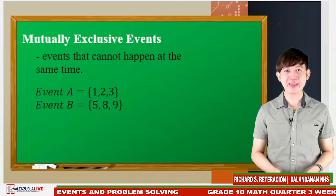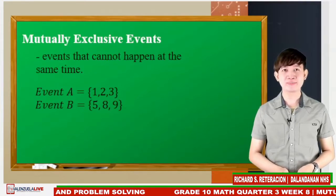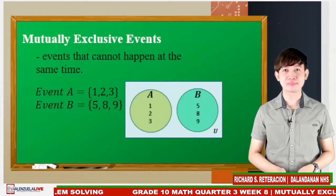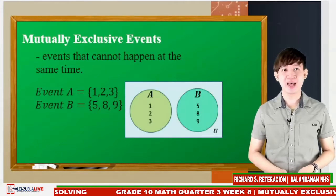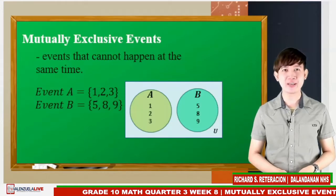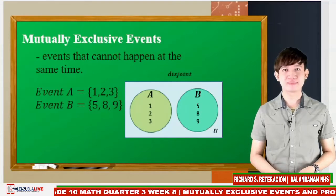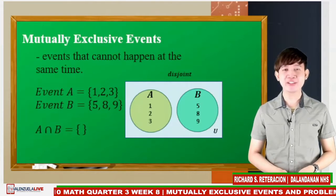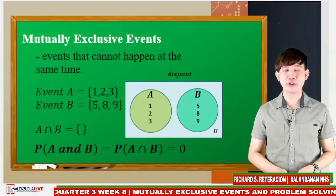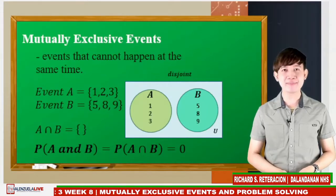Consider event A containing the elements 1, 2, 3 and event B containing the elements 5, 8, 9. Using a Venn diagram, as you see, set A and set B have no common elements, which means that the sets are disjoint. Thus, A intersection B is an empty set. Furthermore, the probability of the disjoint set A and set B is 0.